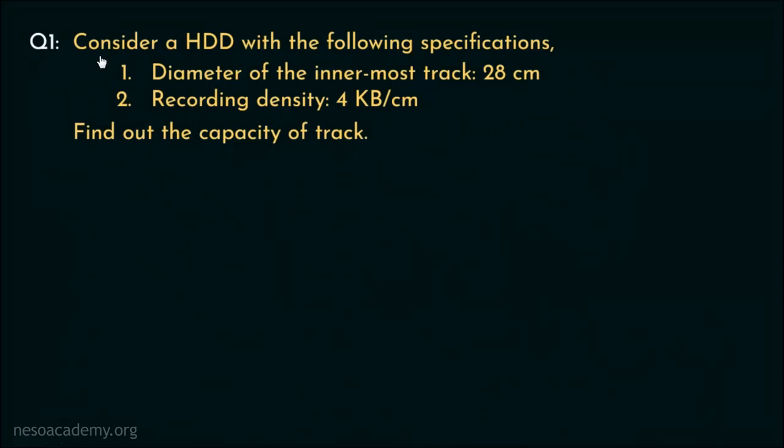Observe this question, consider a hard disk drive with the following specifications. So only two specs are given in here. First, the diameter of the innermost track is provided as 28 cm. Then the recording density is given as 4 KB per cm. We are supposed to find out the track capacity. So let's solve it.